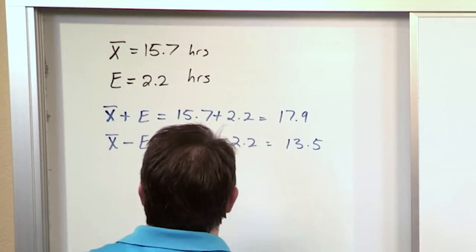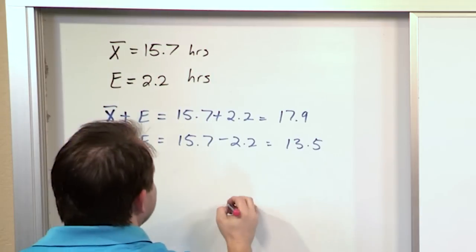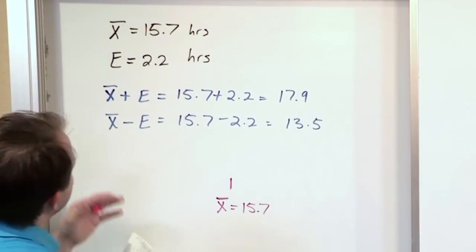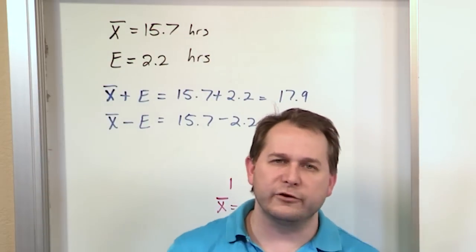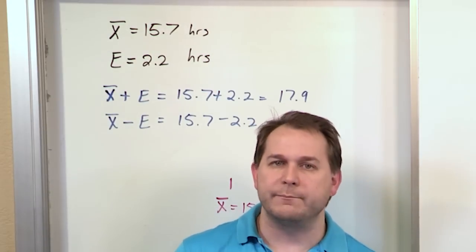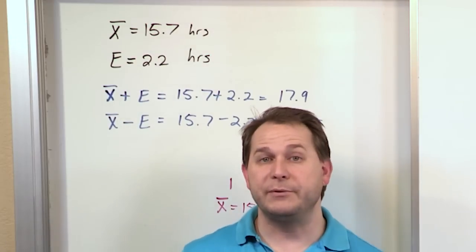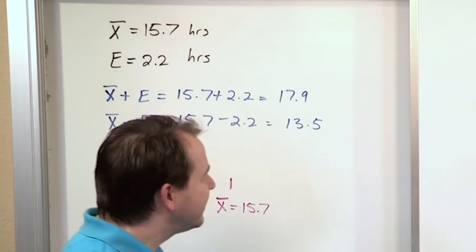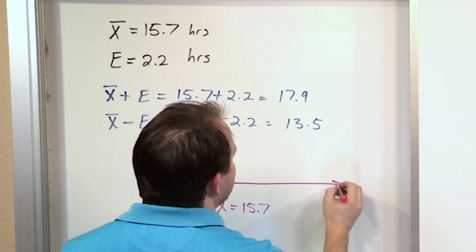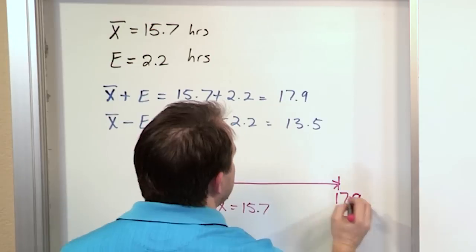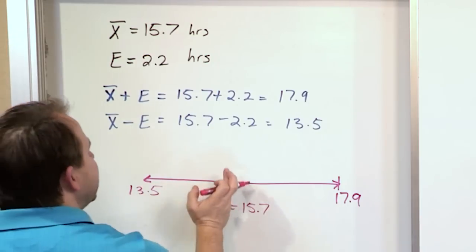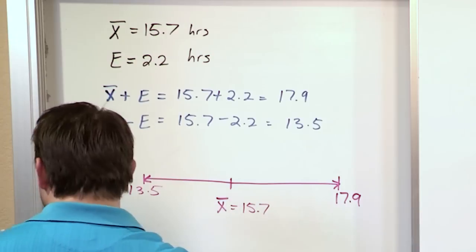If you remember from previous discussions, whatever we get for the sample mean, we're going to take that as a point estimate for our population mean, 15.7. Since the survey resulted in 15.7 hours, we're going to assume that the center of our confidence interval is at that point. We know that's not right, that's why we're given the margin of error. This confidence interval is going to extend up from the point estimate to 17.9, and it's also going to extend below to 13.5.